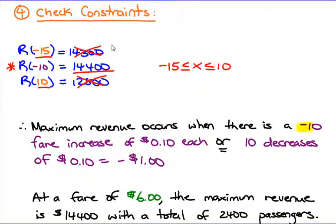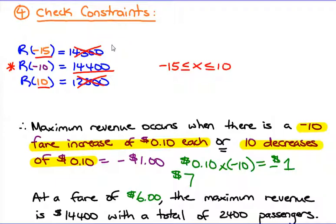But how do you write that as a sentence? Maximum revenue occurs when there is a negative 10 fare increase of 10 cents each - that's a weird sentence. Negative 10 increases? Why would you say negative 10 increases when it's actually better to say positive 10 decreases? So 10 decreases of 10 cents. You have 10 cents multiplied by negative 10, so you get negative $1. If you have a $7 normal price and subtract $1, you get the best price of $6 for your fare that will maximize the revenue at $14,400 with a total of 2,400 passengers.